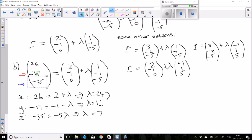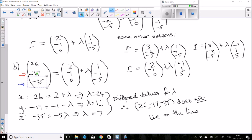Now all these are different values for lambda. Therefore, (26,-17,-35) does not lie on the line. If you get the same value for lambda, then it would lie on the line.